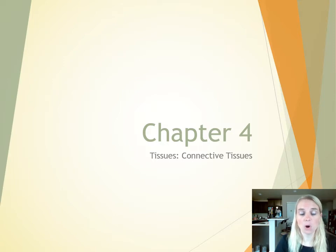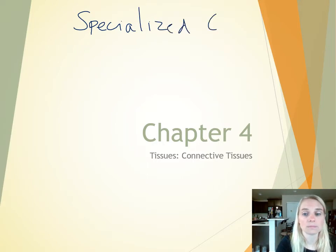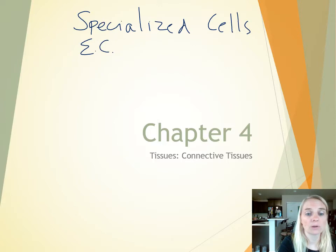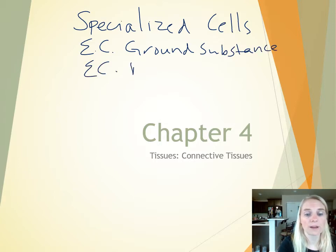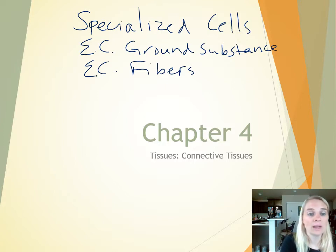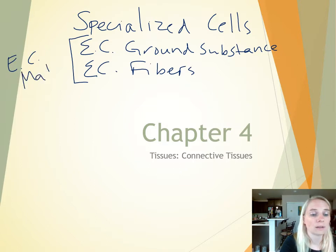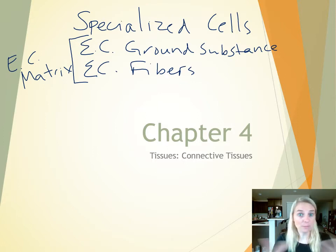All connective tissues have three things in common, even though they're so diverse: specialized cells, extracellular ground substance, and extracellular fibers. Even when comparing things as diverse as blood versus bone, we'll see each of these three components. The extracellular matrix is composed of both the ground substance and the fibers — the ground substance is like the filling, and the fibers run through this filling. That ground substance will vary in consistency depending on the tissue.